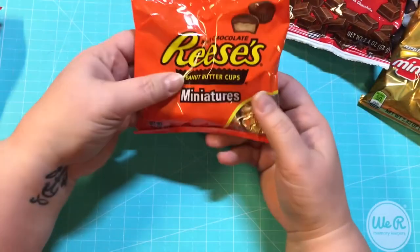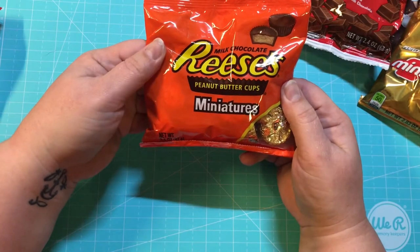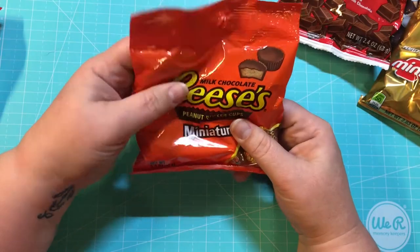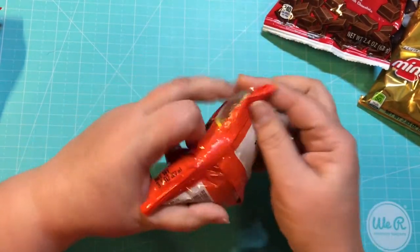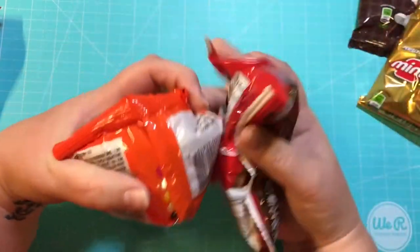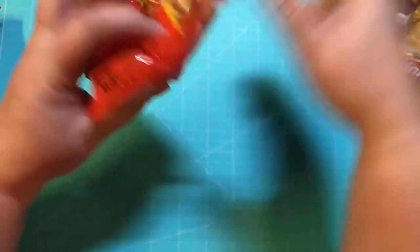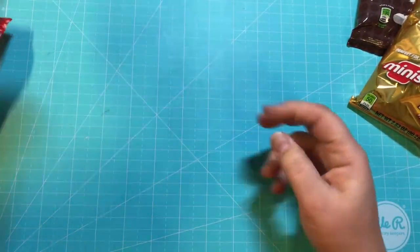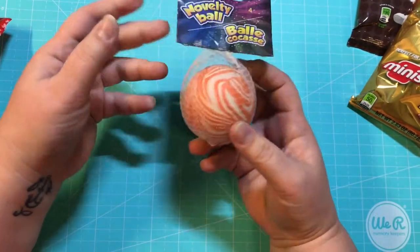And these are my kids' favorite - a 3.1-ounce bag of the Reese's miniatures. And I got these because I figured that they would be easy, you know, that I could ball them up like this and it would be a lot easier to put in the ball.